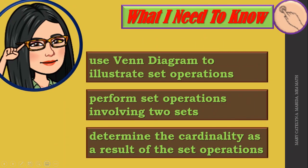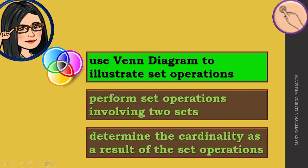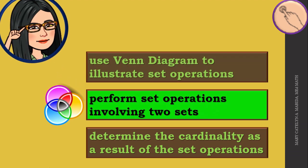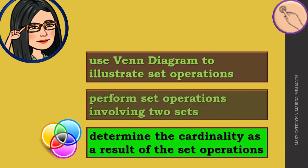At the end of this lesson you are expected to: use a Venn diagram to illustrate set operations, perform set operations involving two sets, and determine the cardinality as a result of the set operations.